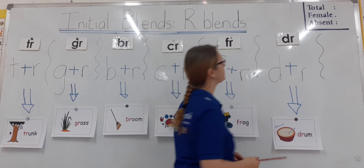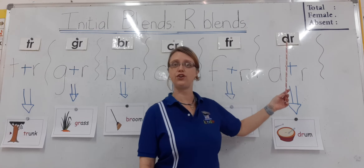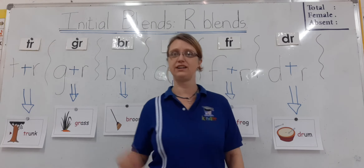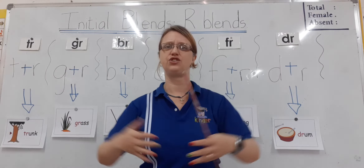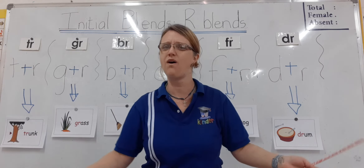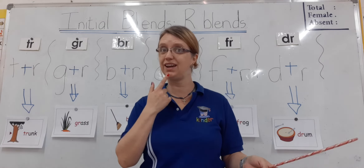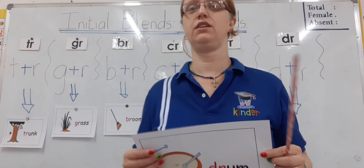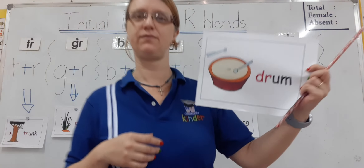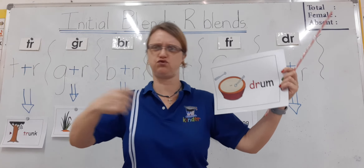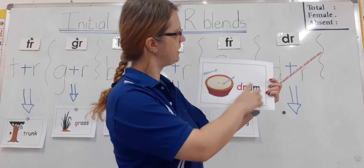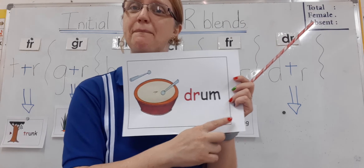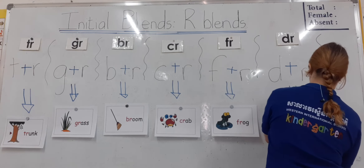And the last sound we're going to look at is DR. It's made up of the letter D and the letter R. DR. Do you draw? Do you like my drawing? The word we're going to learn with DR is DRUM. Who likes to play with drums? DR plus UM gives you DRUM. Well done.